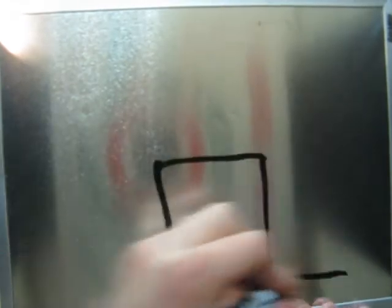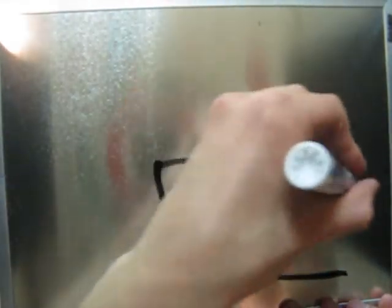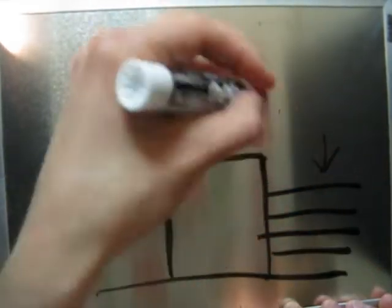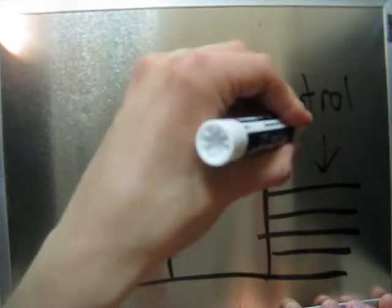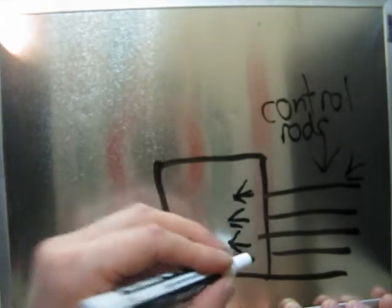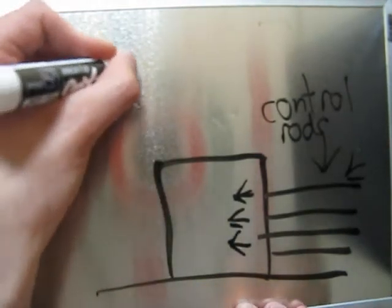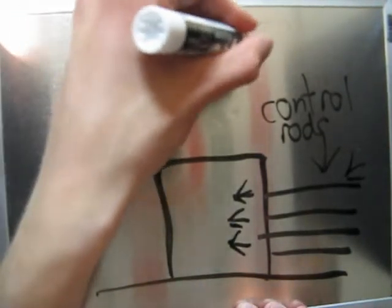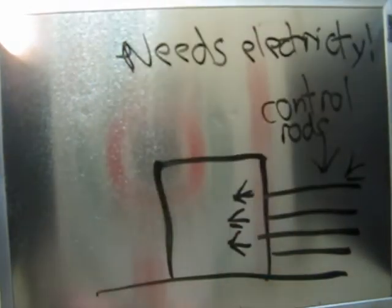Now, let's say we have our reactor here and it has control rods that are sticking out horizontally. If you're having a reactor that's overheating, to insert those control rods, you need things like electricity to shove it into the reactor and slow down the nuclear reaction.